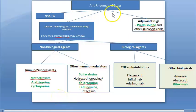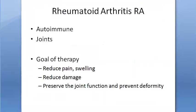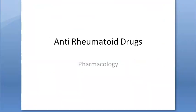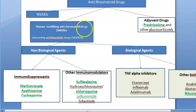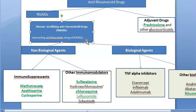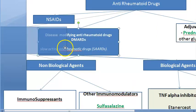Hello people. In the last video we started off with the classification of rheumatoid drugs. We saw what rheumatoid arthritis is, and in the classification we saw that the first choice is NSAIDs, then in some more severe cases they add DMARDs, which are also called SAARDs — slow acting anti-rheumatoid drugs — because these take weeks to act.